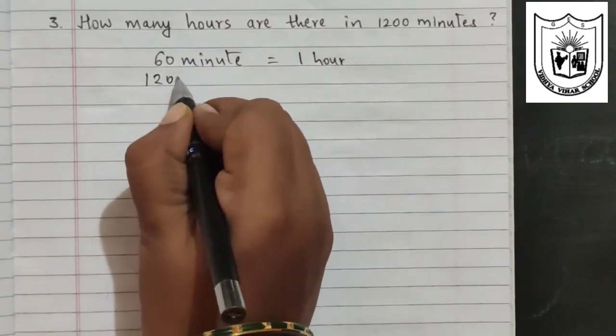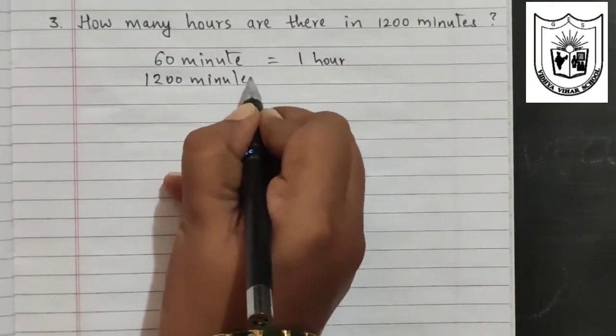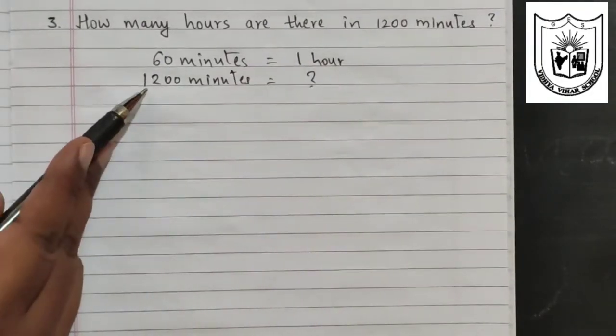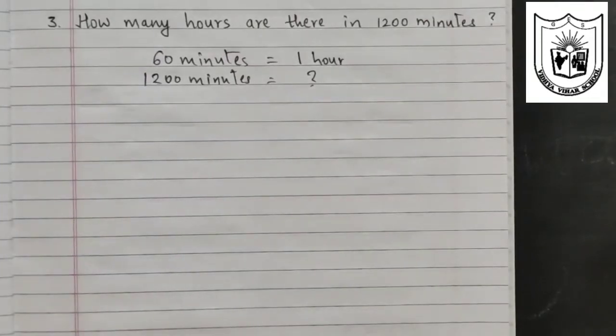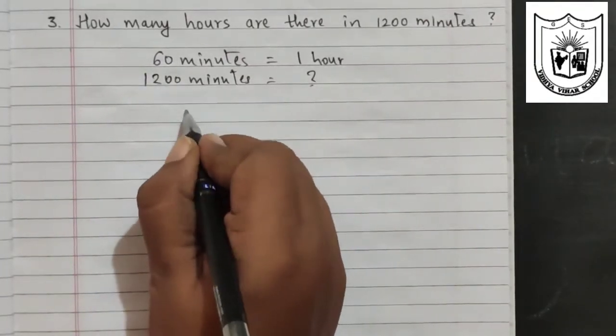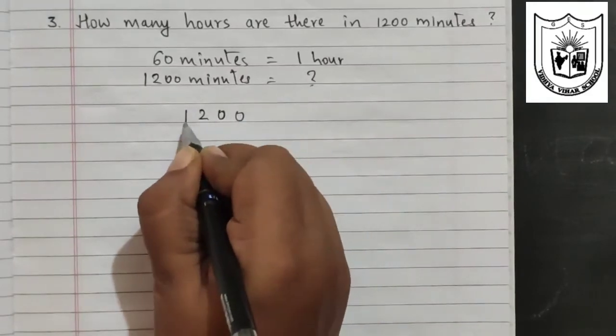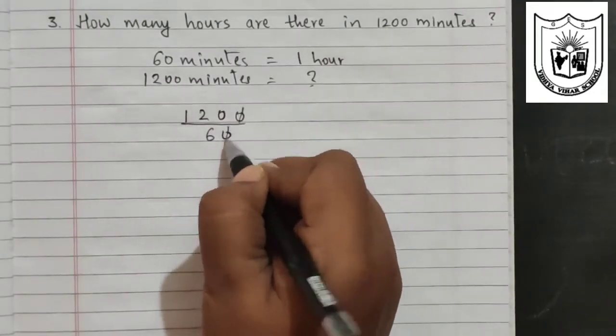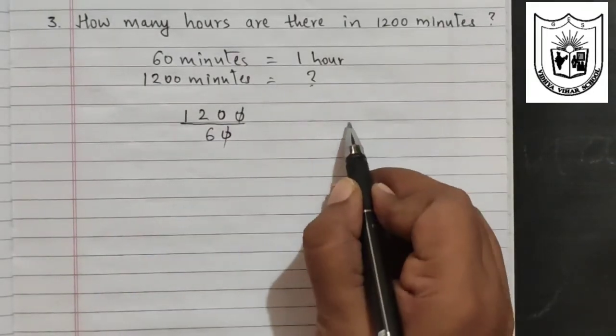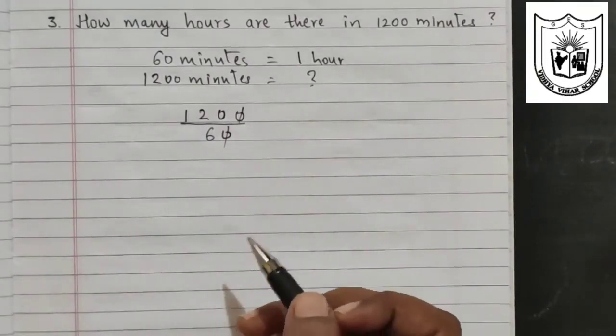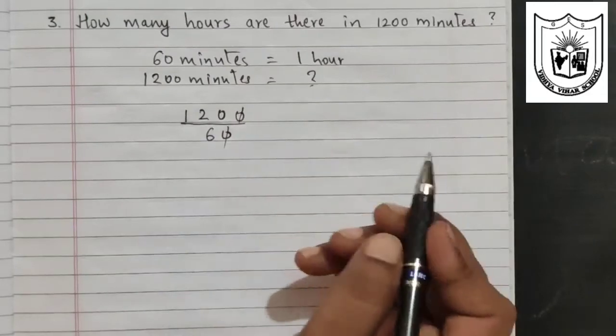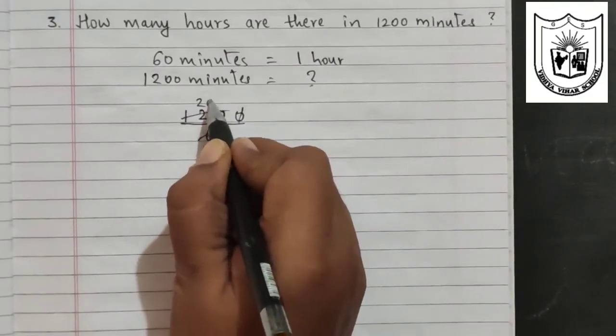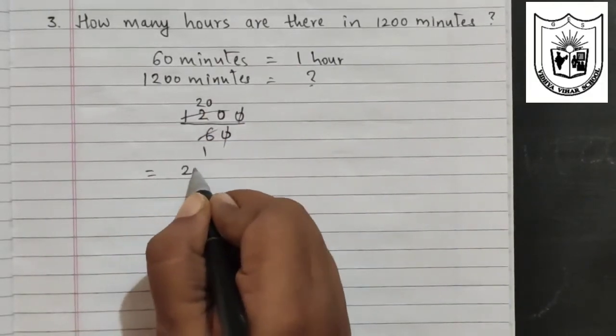So if you have 1200 minutes, then it will be how many hours? So to calculate this, we will have to divide 1200 by 60. So this problem you can directly solve even this way. 1200 divided by 60 can be written like this also. So 0 and 0 will get cancelled. Now if you want, you can do it the usual way or we can cancel directly in 6 table. 6, 1 is 6. 6, 2 is 12. And then this 0 will go on top. That is 20 hours.